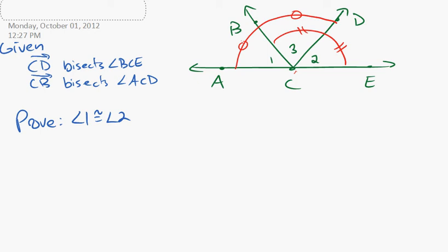What is angle two congruent to right away? Angle three. We've got two things that are congruent to the exact same thing.